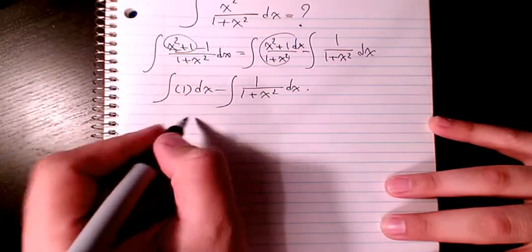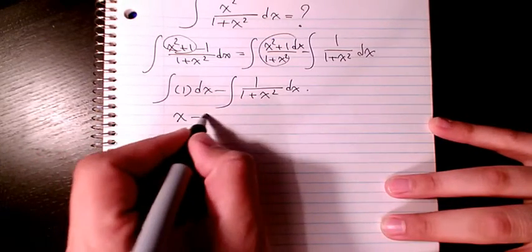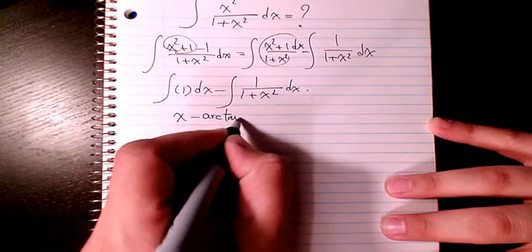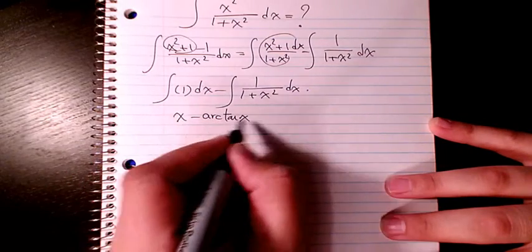Integration of 1 dx is x. Integration of this part is arctan x. So it's going to be x minus arctan x.